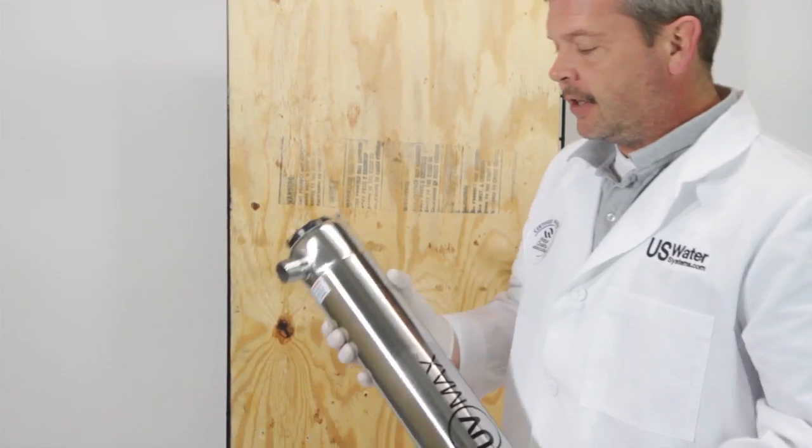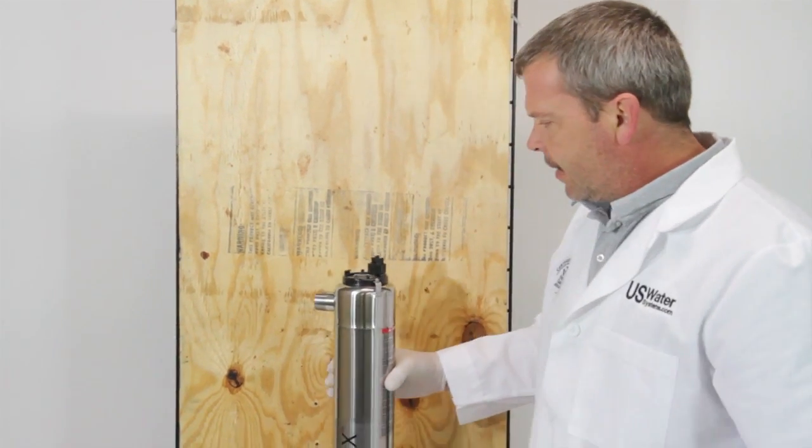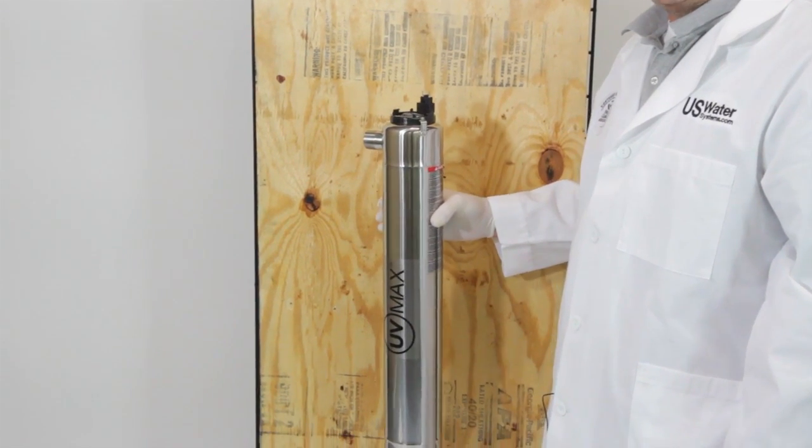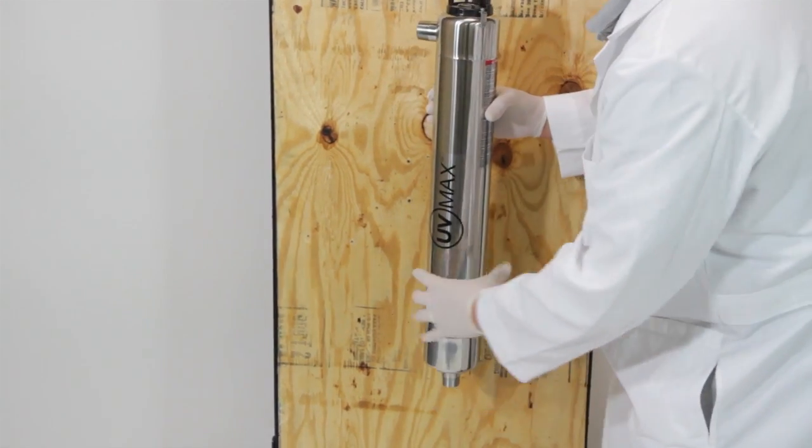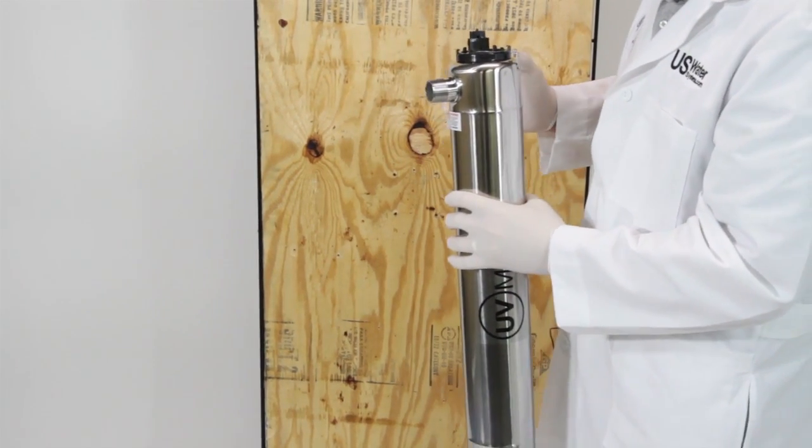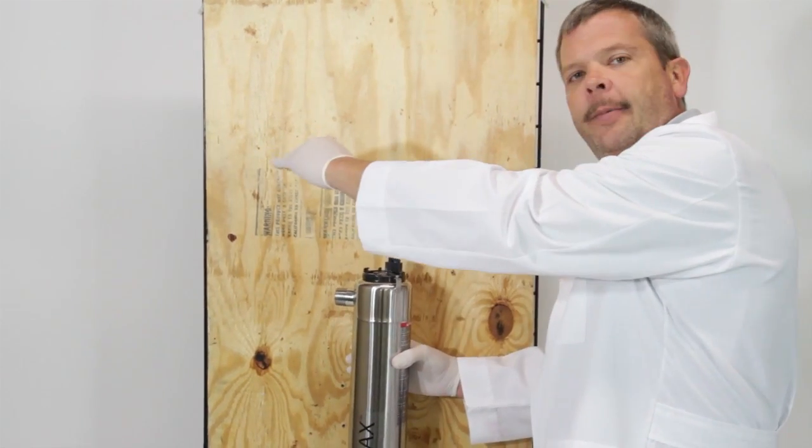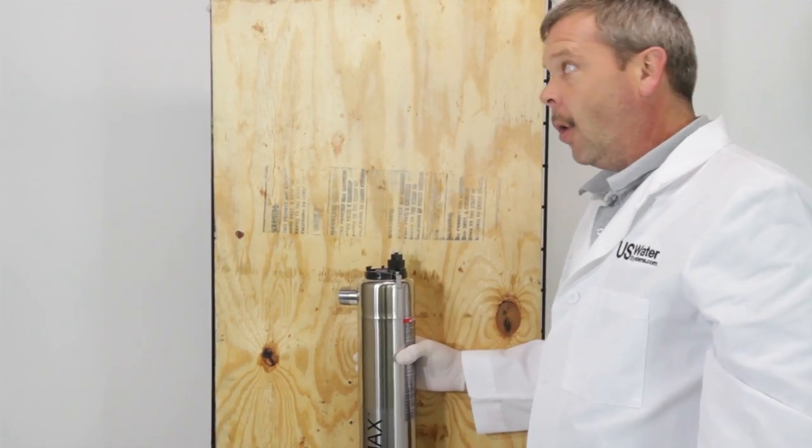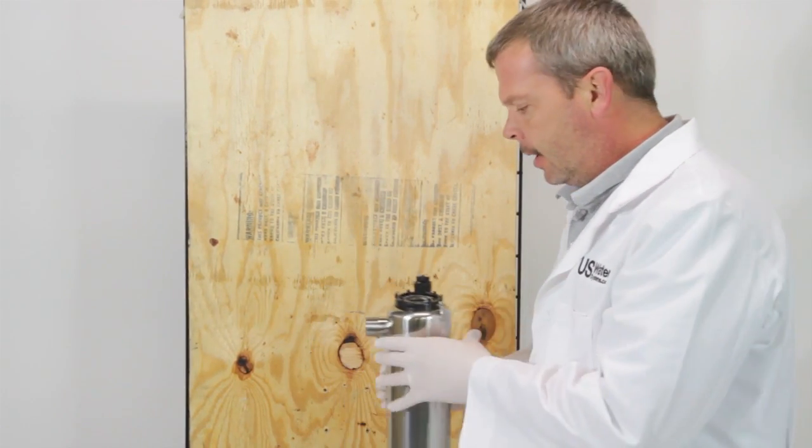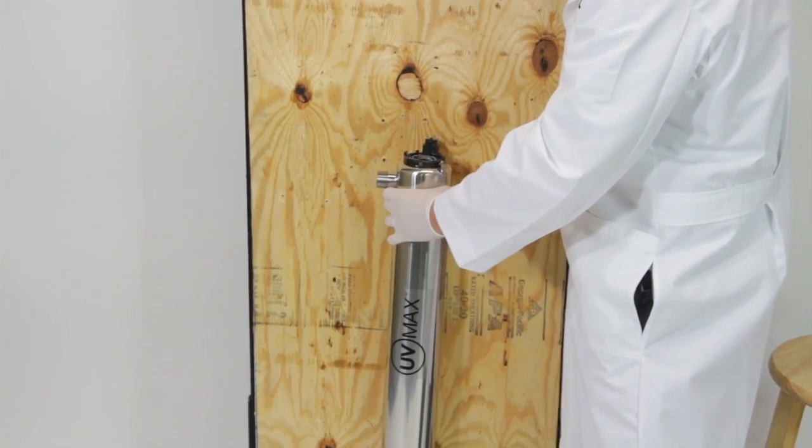First and foremost we're going to mount the chamber. When you mount the chamber, you want to keep a couple things in mind. If you're going to mount it vertical or horizontal, either way will work. We prefer vertical so that the water comes in from the bottom, swirls around, and comes out the top at the side. You're going to have to replace this bulb once a year or every 9,000 hours, so you don't want to put anything over the top where you can't slide the bulb back out. Typically we mount these lower to the ground in a vertical position.